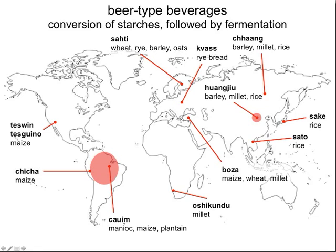What about beer-type beverages? The fundamental difference between wine-type and beer-type beverages has everything to do with the conversion of starch — those polymers of glucose that are unavailable for fermentation — into simple sugars that the yeast can act upon. Let's move through some examples in clockwise fashion, starting with sake. Sake is a beverage we associate with Japan, derived from the grain rice, so we have to mobilize the starch bound up in the rice grain so that fermentation can take place.